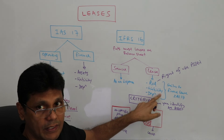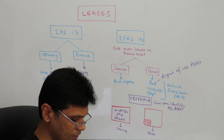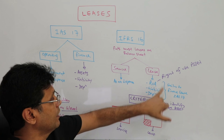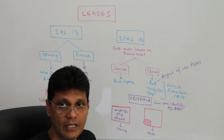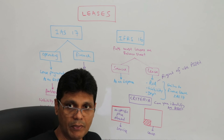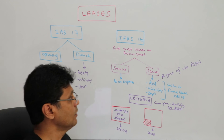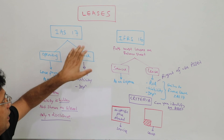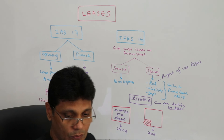Once it is a lease contract, the liability must be recognized and depreciation charged on the asset. The right-of-use asset is calculated as the present value of the lease payments using the applicable interest rate. I will discuss a practical example on this treatment in a future session. These are the main differences between IAS 17 and IFRS 16.